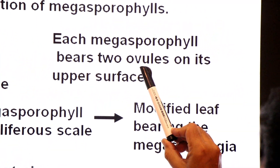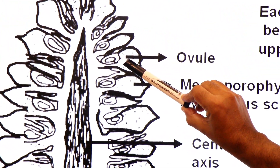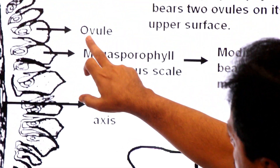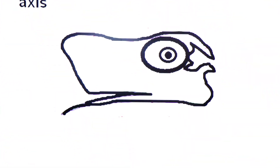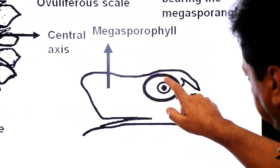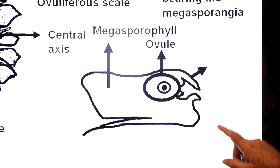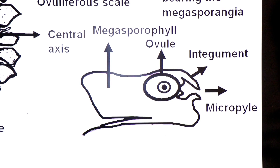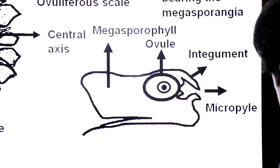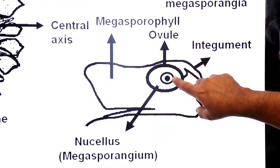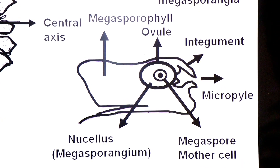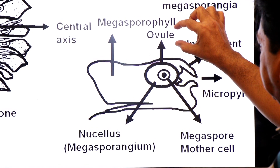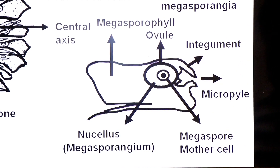Each megasporophyll bears two ovules on its upper surface, and after fertilization the ovule develops into a seed. Here you see the ovule on the upper surface of the megasporophyll, with a protective covering called the integument and an opening called the micropyle. Inside the ovule is the megasporangium, called the nucellus, which contains one megaspore mother cell. The nucellus along with integument is known as the ovule.